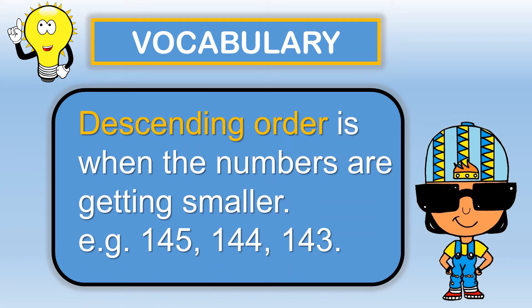Descending order is when the numbers are getting smaller. Example: 145, 144, 143.